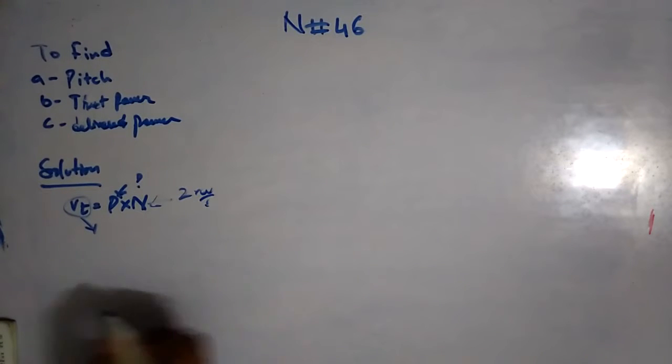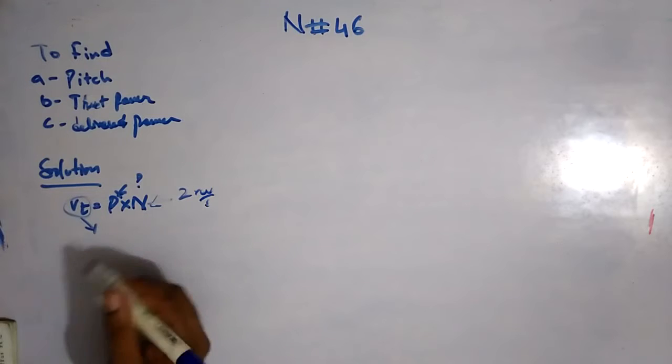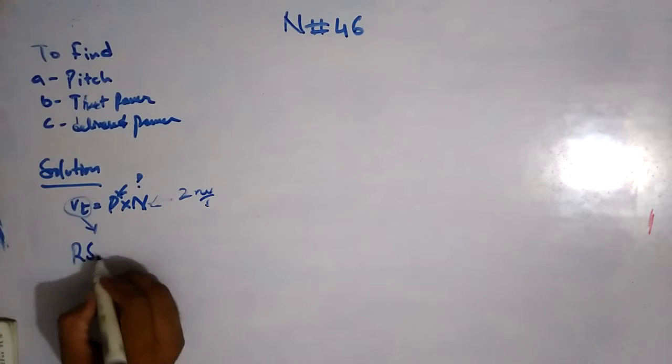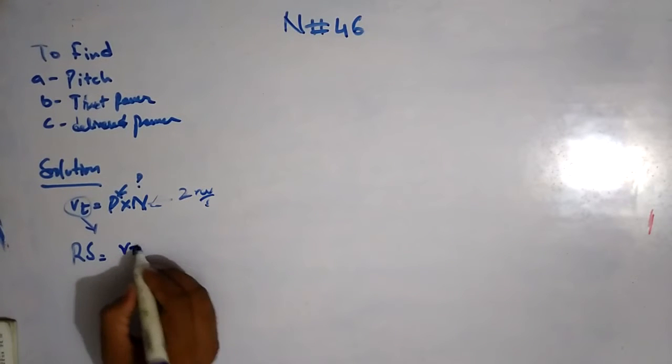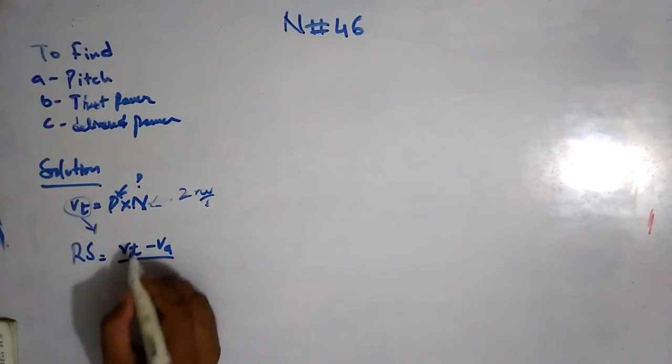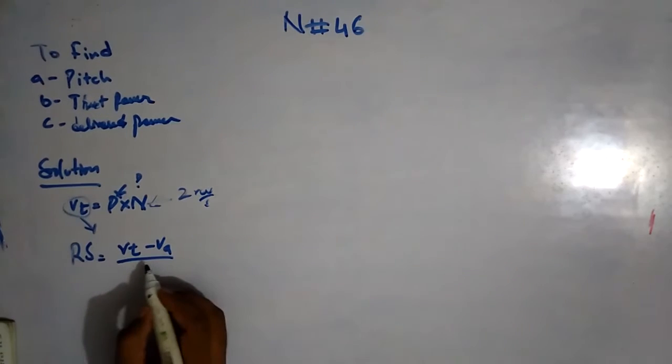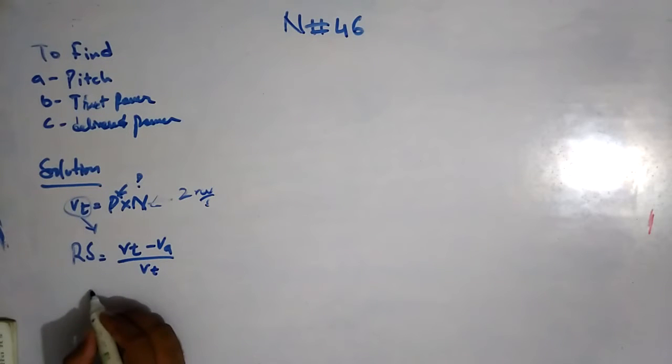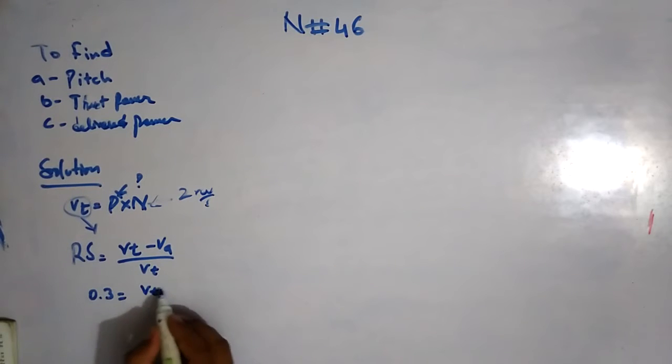For this other formula, if the data is given - so I have real slip. Real slip is equal to (VT - VA) divided by VT. RS is real slip, which is 0.3. VT I have to find, and VA - what is VA?